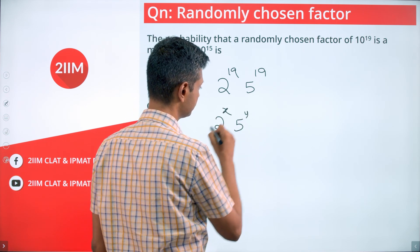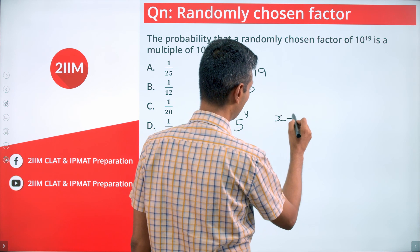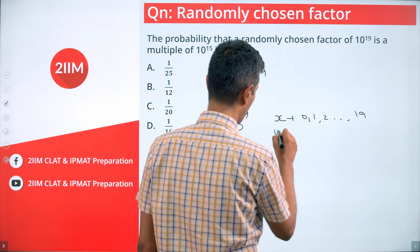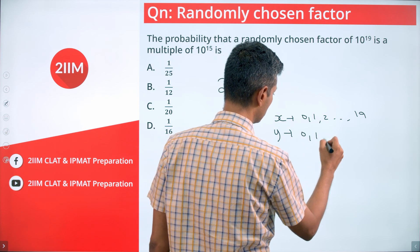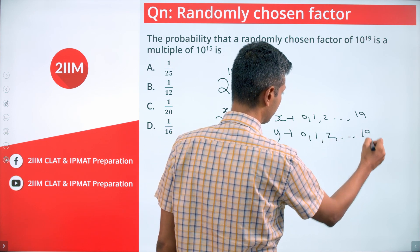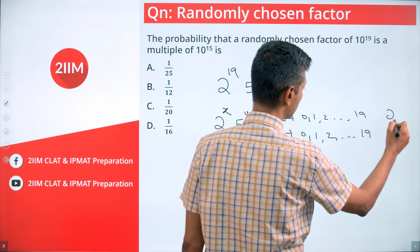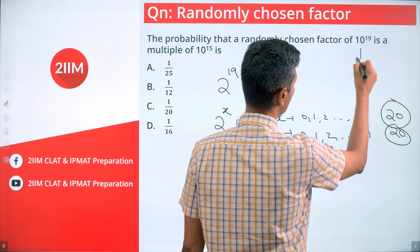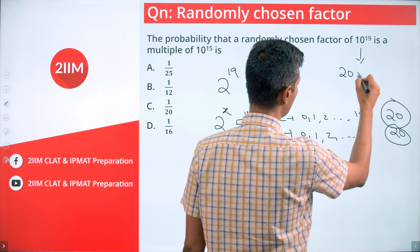where x can take values from 0 to 19 and y can take values from 0 to 19. So x can take 20 values, y can take 20 values, so this number has 20 times 20 equals...